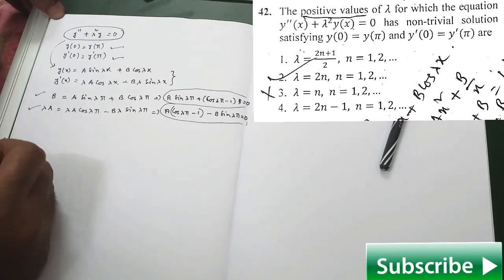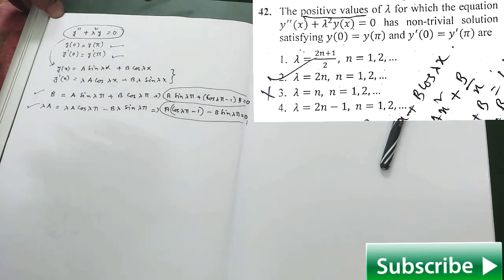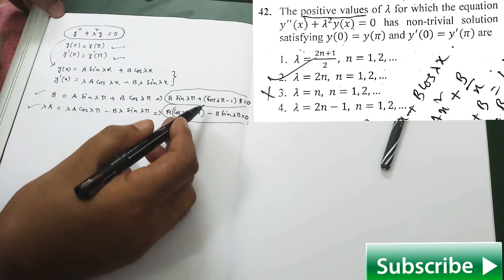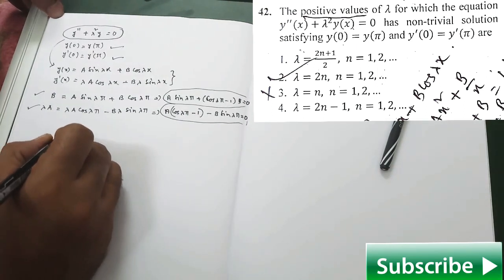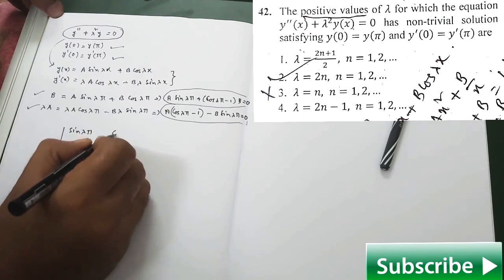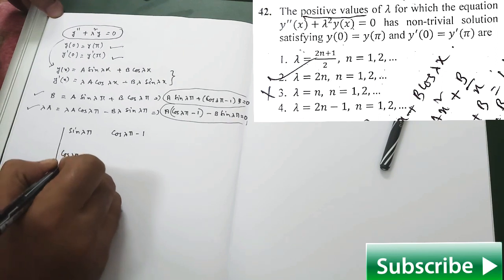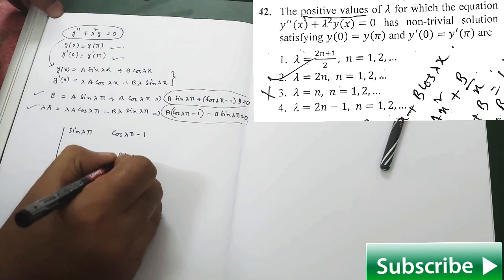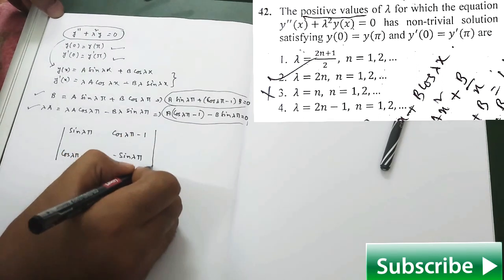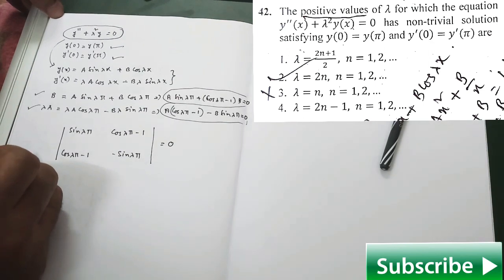To get a non-trivial solution satisfying both boundary conditions, we need the corresponding determinant equal to 0. That determinant has entries sin(λπ), cos(λπ)−1, cos(λπ)−1, and −sin(λπ). This determinant must equal zero to obtain a non-trivial solution.